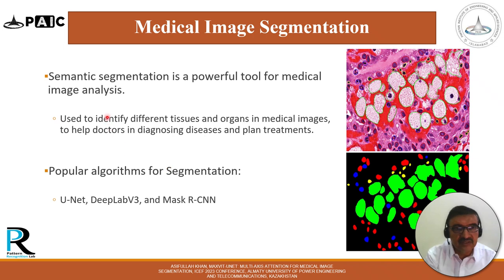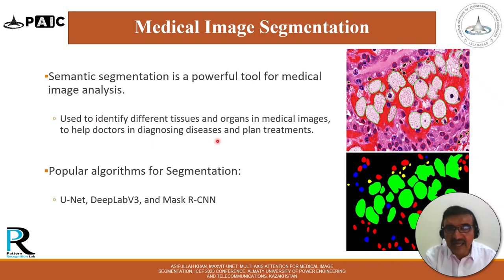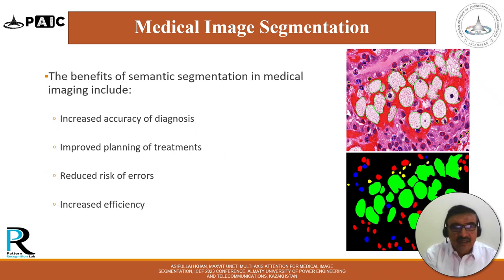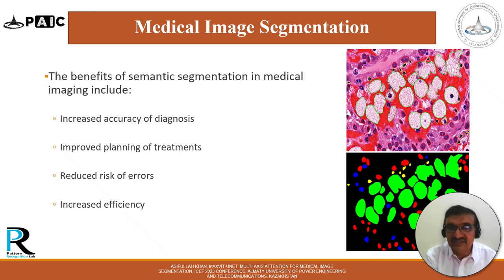Semantic segmentation is a powerful tool for medical image analysis because it is used to identify different tissues and organs in medical images, helping doctors in diagnosing diseases and planning treatments. Popular algorithms for segmentation include UNet, DeepLab V3, and Mask RCNN. The benefits in medical imaging include increased accuracy of diagnosis, improved treatment planning, reduced risk of errors, and increased efficiency.